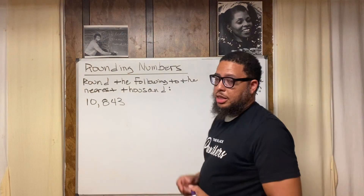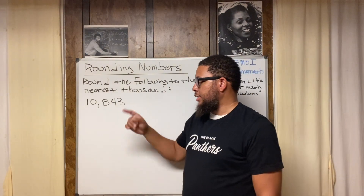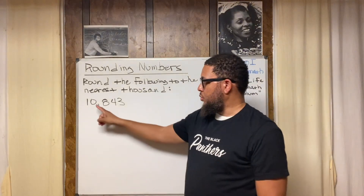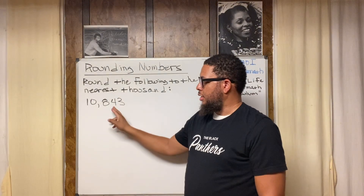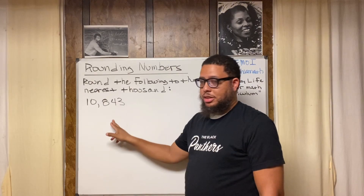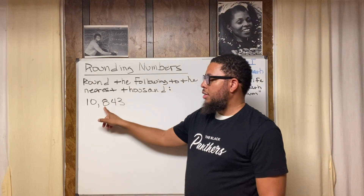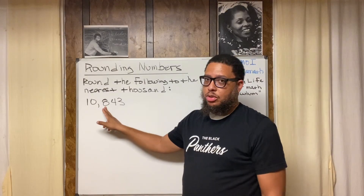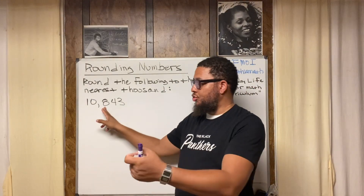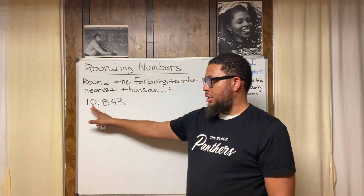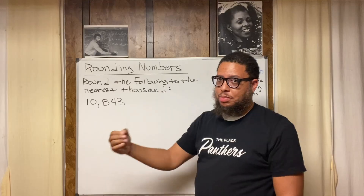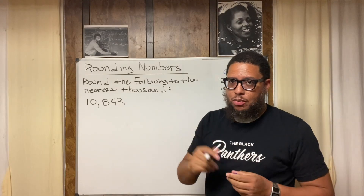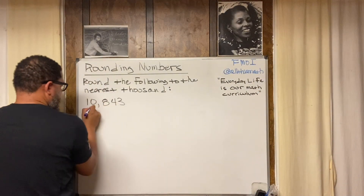For the algorithm, since we're rounding to the nearest thousand, we need to find the thousands place in 10,843. Notice I said digit, not number. The zero is in the thousands place. The three is in the ones place, four is in the tens place, eight is in the hundreds place — representing 800 — and there are zero thousands but one ten-thousand. So let's underline the zero, because that's the place we're rounding to.